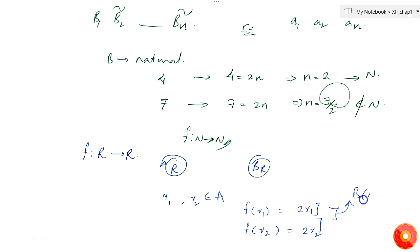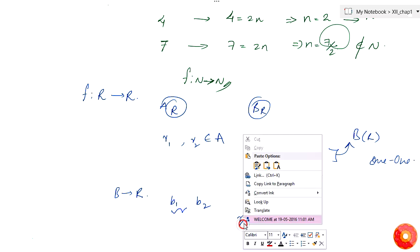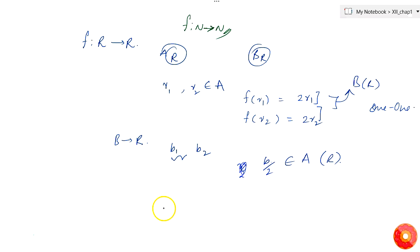We know 2r1 and 2r2 are rational numbers, so they belong to set B. If 2r1 = 2r2 then r1 = r2, so f is one-one. To check onto: take any element b in B — b is a rational number — then b/2 will also be a rational number, so b/2 belongs to A. That means every element in B has a preimage in A. Therefore, f mapped from rational numbers to rational numbers is both one-one and onto.